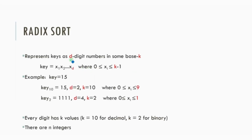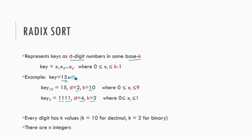For Radix Sort, every number is considered as a d-digit number of base k. For example, the number 15 is a base-10 number with two digits. The same number can be considered as a base-2 number with four digits: 1, 1, 1, and 1. Every digit of a number can be represented with k different values, where k is the base. For the number 15, the least significant digit is 5, but it can be 0 through 9.